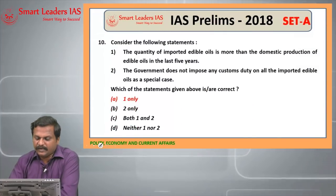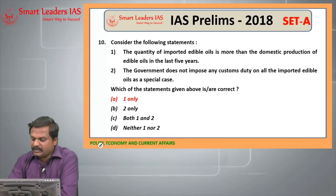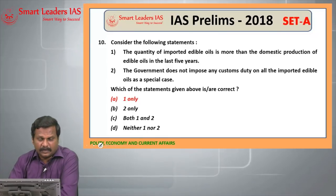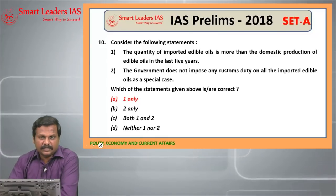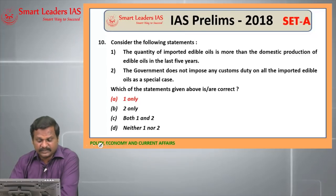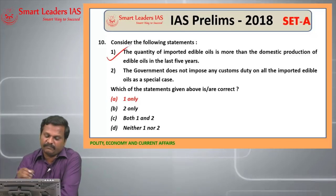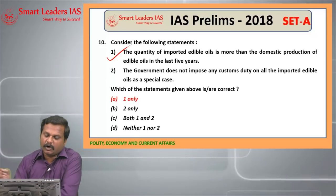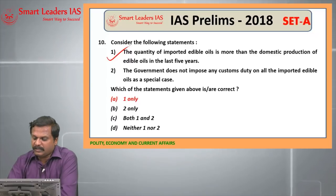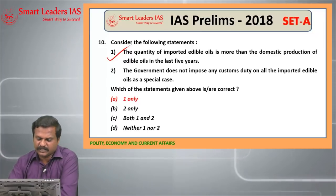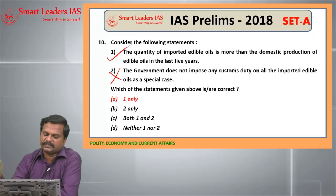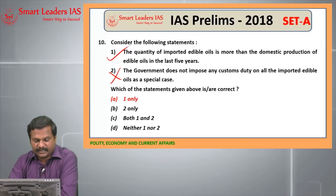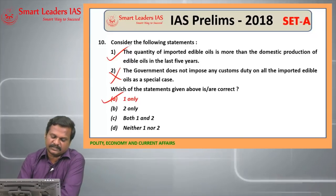Next question: the quantity of imported edible oil is more than the domestic production of edible oil in the last 5 years — this is the right statement. More than double the amount of domestic production is the quantity of imported oil for the last 4 years especially. The government does not impose any customs duty on all imported edible oil as a special case — this is a wrong statement. So the answer is A, 1 only.